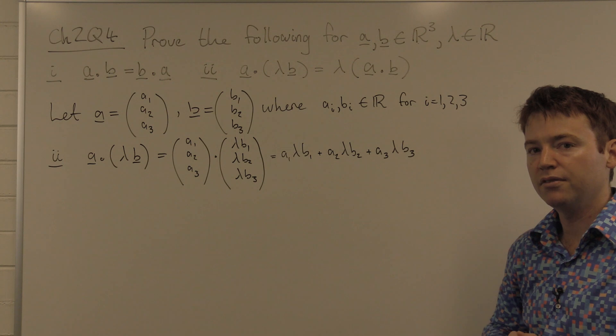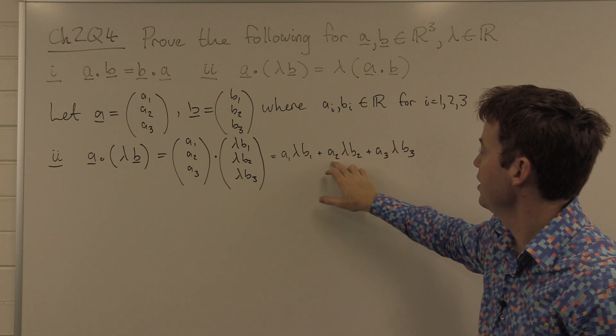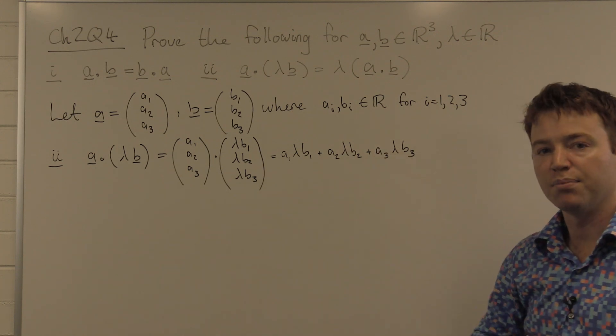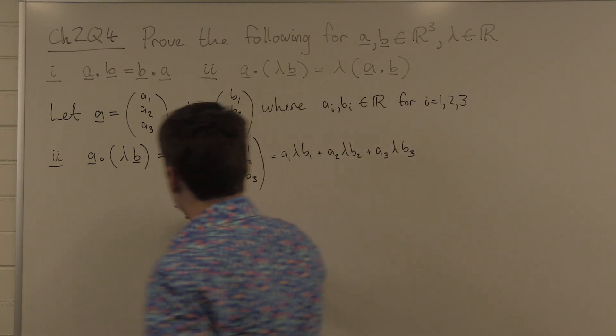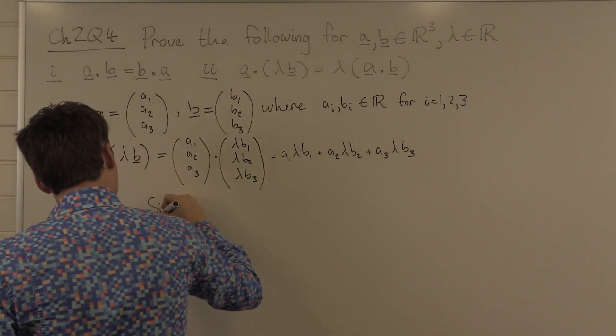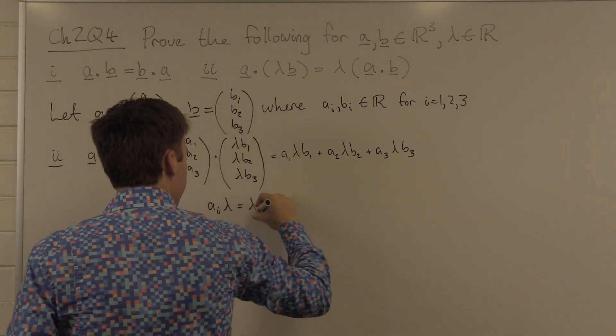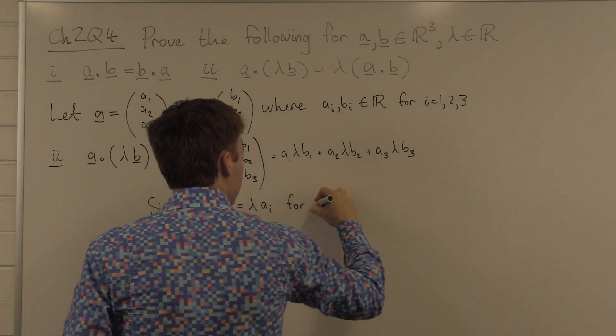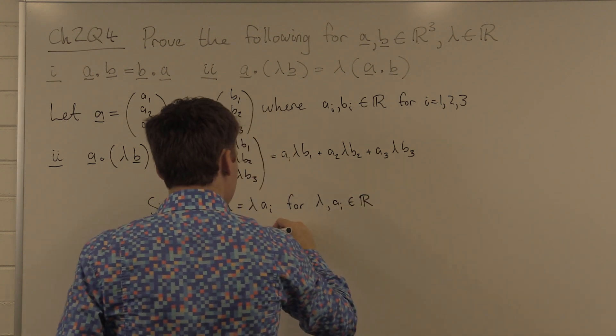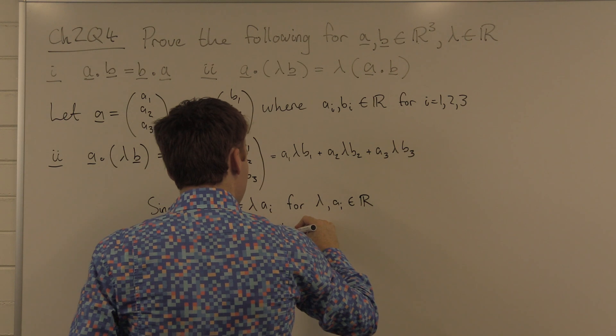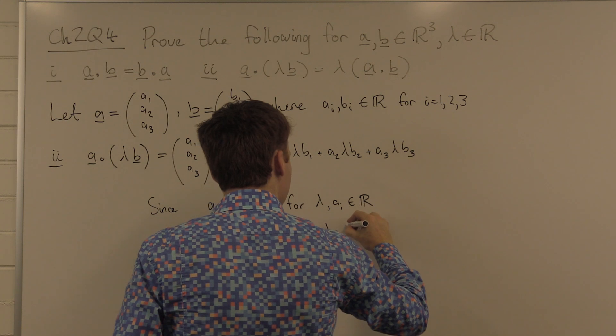And now, I will take the lambda and bring it out the front of this sum and here and here as well. And the property that allows me to do that is the fact that these are all real numbers. Since A1 lambda equals lambda A1, this becomes lambda A1 B1 plus lambda A2 B2 plus lambda A3 B3.